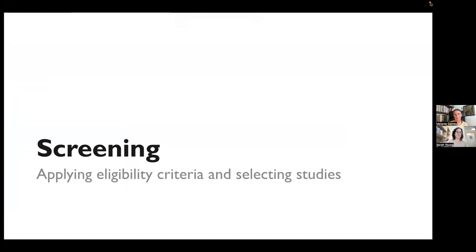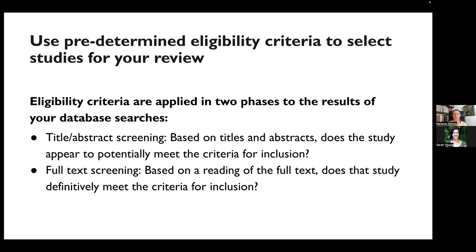Next, we're going to be talking about the screening phase of your scoping review. The eligibility criteria, which as Sarah mentioned will be predefined, are going to be applied in two phases to your project. In the first phase, you're going to be applying the criteria to just the title and abstracts of the studies found in your searches. Because titles and abstracts don't have much information, you're really asking: does the study appear to potentially meet the criteria for inclusion?